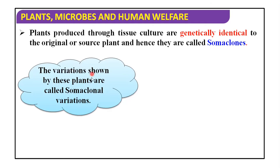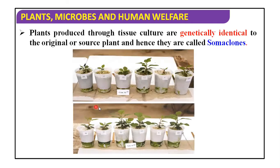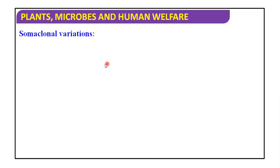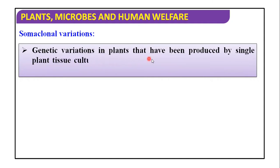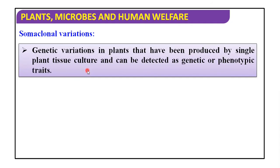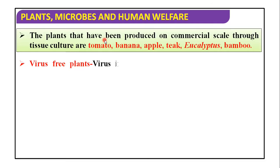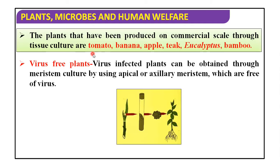The variations shown by these plants are called somaclonal variation. Meristem of banana, sugarcane, and potato were successfully cultured — meristem means the region where the tissue can grow. Somaclonal variations are the genetic variations in plants produced by single-plant tissue culture, detected as genetic or phenotypic traits. Variation in number and structure of chromosomes is observed. Plants produced commercially through tissue culture include tomato, banana, apple, eucalyptus, and bamboo.